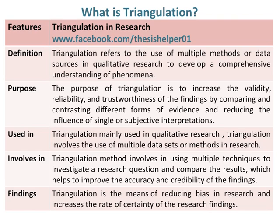Triangulation is mainly used in qualitative research and involves the use of multiple data sets or methods. It involves using multiple techniques to investigate a research question and compare the results, which helps to improve the accuracy and credibility of the findings. Triangulation is also a means of reducing bias in research and increases the rate of certainty of the research findings.